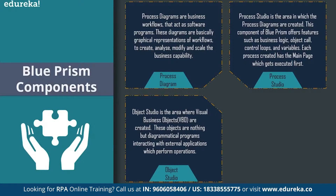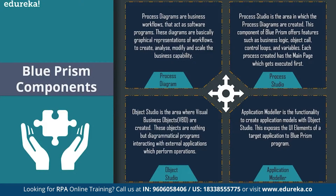Moving on to the third component — object studio. Almost all enterprises need to communicate with external applications to automate tasks. Since this cannot happen in the process studio itself, Blue Prism has the object studio component. Object Studio is the area where visual business objects are created — these objects are diagrammatic programs interacting with external applications to perform operations. One business object provides an interface with only one external application. Each object studio does not have a main page, but it does have two default pages organized as a flat group.